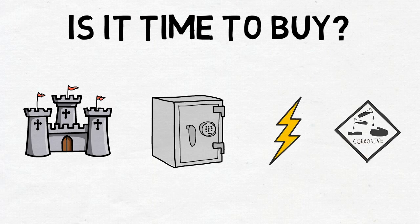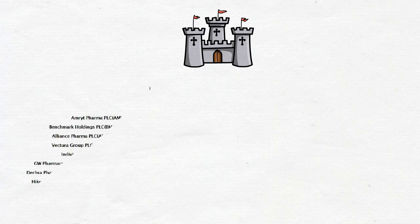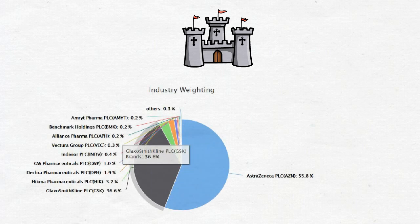GlaxoSmithKline's biggest attribute that gives it a moat is its market dominance and diversified offering. In the UK market for drug manufacturers, GSK is the second largest company and takes up a market share of 36.6 percent. The largest company in this space is AstraZeneca which represents 55.8 percent. Then in third place is Hikma Pharmaceuticals which takes up a tiny 3.2 percent. When a tiny number of companies, in this case two, take up such a large percentage or high percentage of market, it gives them more control over pricing leading to hopefully for them more profits. It also becomes harder for new entrants as the barrier to entry can be quite high.